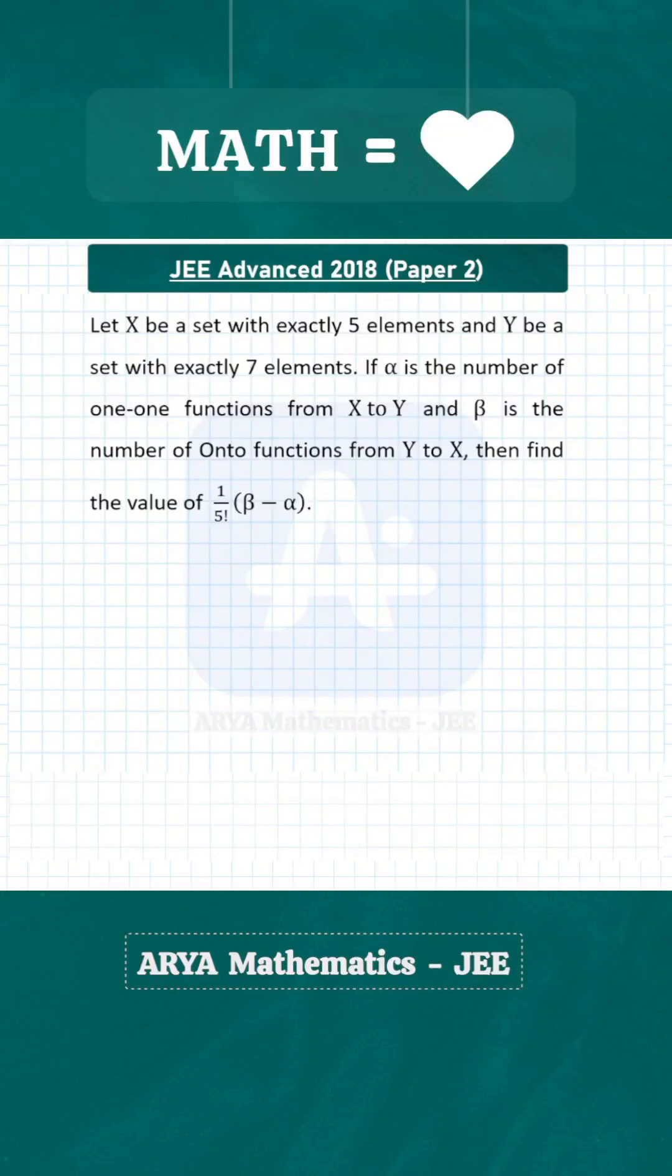Let X be the set containing exactly 5 elements and Y is the set containing 7 elements. If α is the number of one-to-one functions from set X to Y and β is the number of onto functions from set Y to X, then we have to find the value of (β - α) divided by 5 factorial.